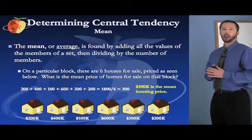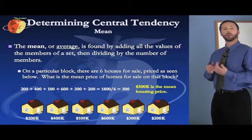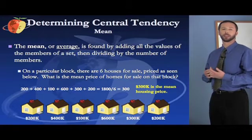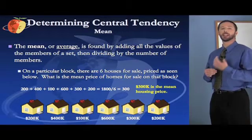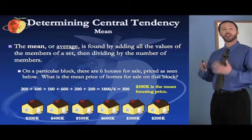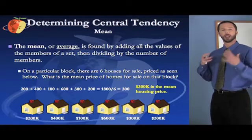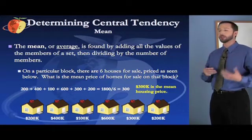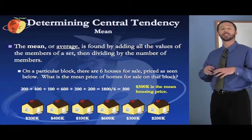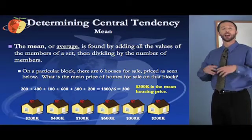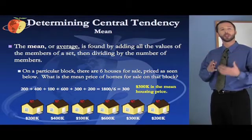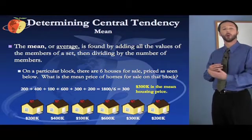Determining Central Tendency. There are three main ways of determining central tendency that you need to be familiar with for the exam: mean, median, and mode. When we say central tendency, we're saying we have a set of data — a set comprised of certain members, in this case a set of homes that have different prices — and we want to see how best we can represent a general truth about that set: what is the central tendency of the home prices?